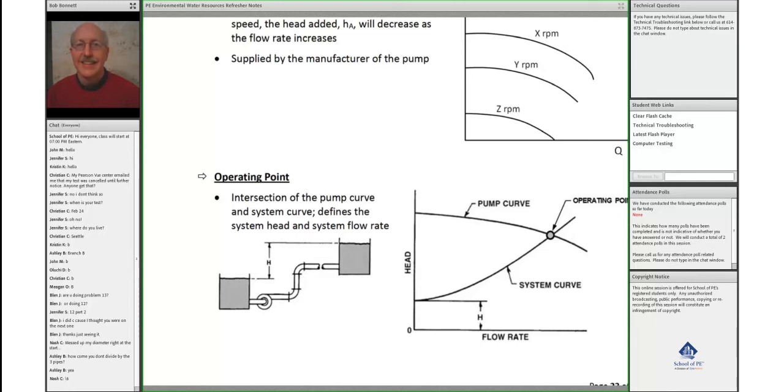We know how to get the head loss due to friction equations, and what are the differences between the source and destination tank—total static head. It's that intersection of those two: system curve and characteristic curve. Right here at that operating point is where you can determine what is the flow rate, straight down.